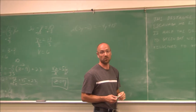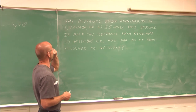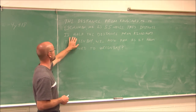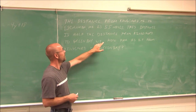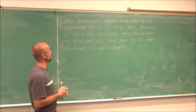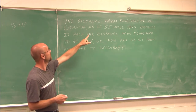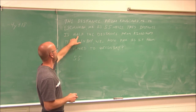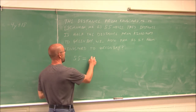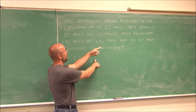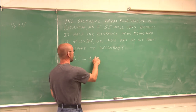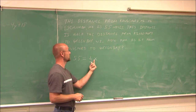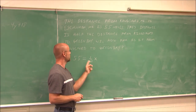Now we're going to look at an application problem where we have to solve an equation. The distance from Kingsford, Michigan to Escanaba, Michigan is 55 miles. This distance is half the distance from Kingsford to Green Bay, Wisconsin. How far is it from Kingsford to Green Bay? We're told 55 miles is half the distance from Kingsford to Green Bay — that's what we don't know, so I assign that the variable x.